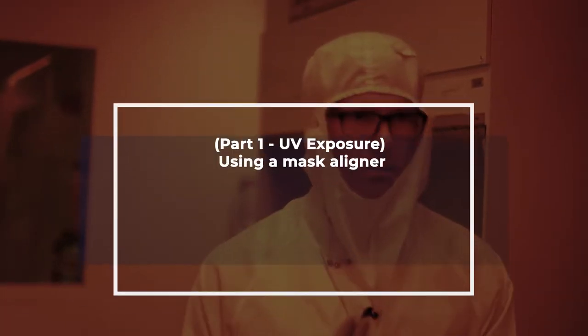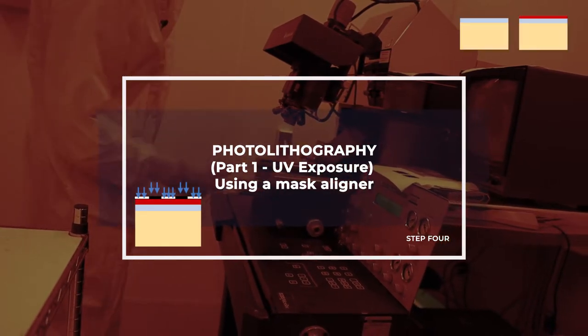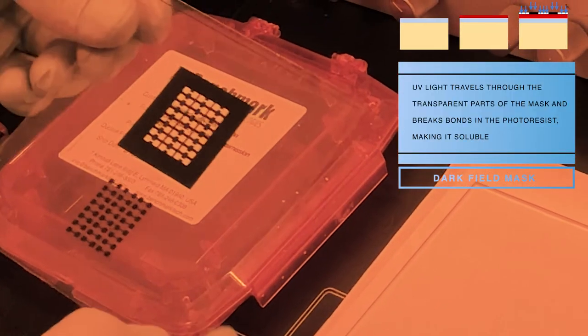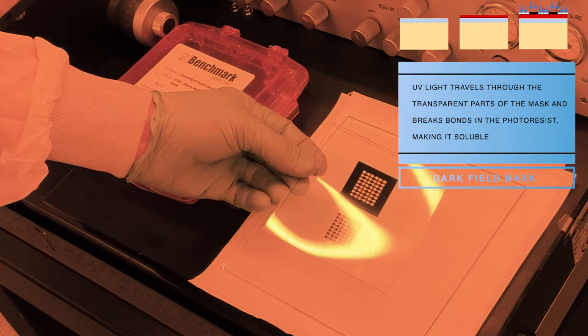All right, so now we're going to do the mask aligner over here. For a quick and dirty process, you can do transparencies and the transparent regions where the photo resist will see the UV light and interact with it. Definitely worth your while if you're doing some prototyping.